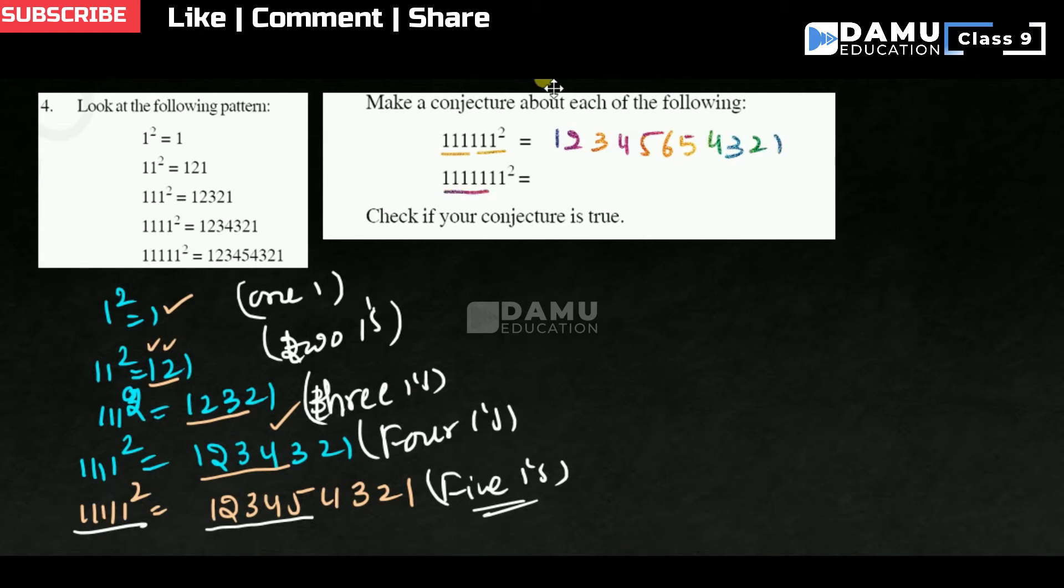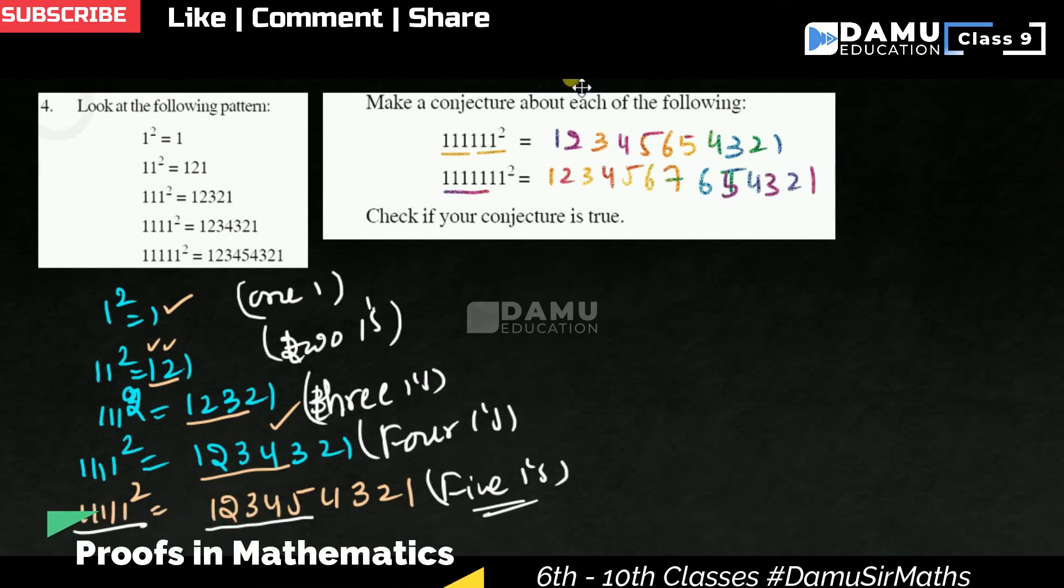So here 4 and 3, 7 is there. For that 1, 2, 3, 4, 5, 6, 7. Then again it is decreasing: 6, 5, 4, 3, 2, 1. So for this we can make one pattern. Check if your conjecture is true. Yes, you can make a pattern for this. So 1, 1, 1 and so on.